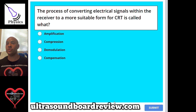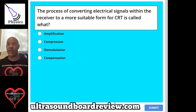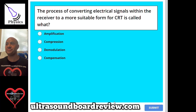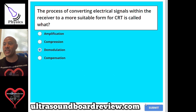Question 72: The process of converting electrical signals within the receiver to a more suitable form for CRT is called what? A, Amplification; B, Compression; C, Demodulation; or D, Compensation. The answer is C, Demodulation.